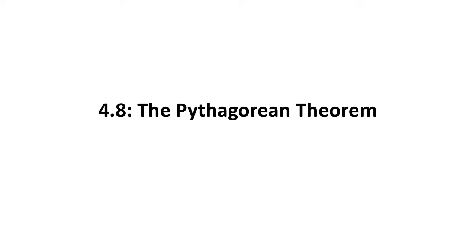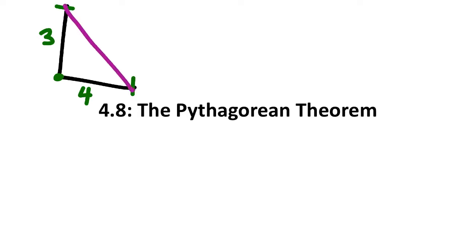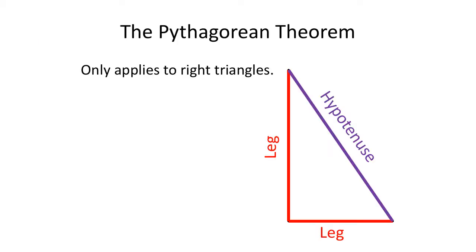For those of you that have worked in construction, if they want to know if something is square, they use the 3-4-5 triangle. So they measure their corner: 3 inches this way, 4 inches this way, and they make those two marks. If the diagonal is 5 inches, then they know that the corner is square — it's a 90-degree angle and it's perfect. But if it's off, like if it was 5.8 inches, then that's definitely not 90 degrees and something needs to be fixed. So that's an application of the Pythagorean Theorem.